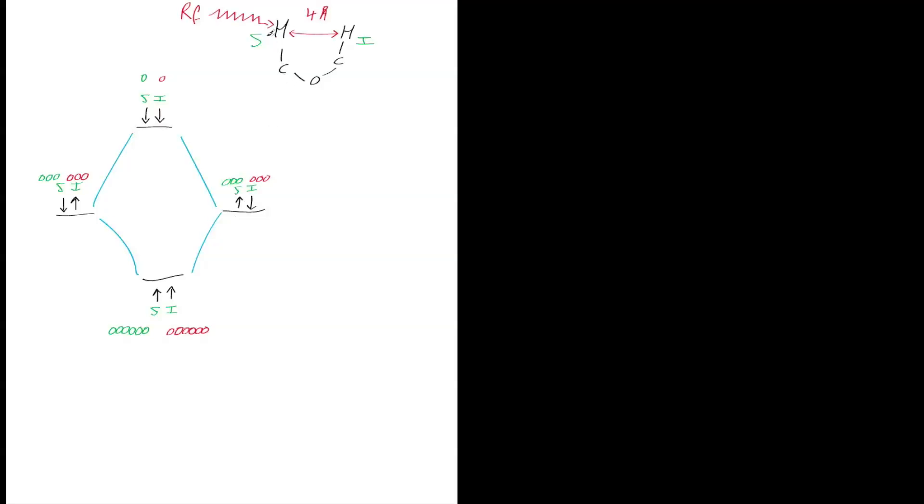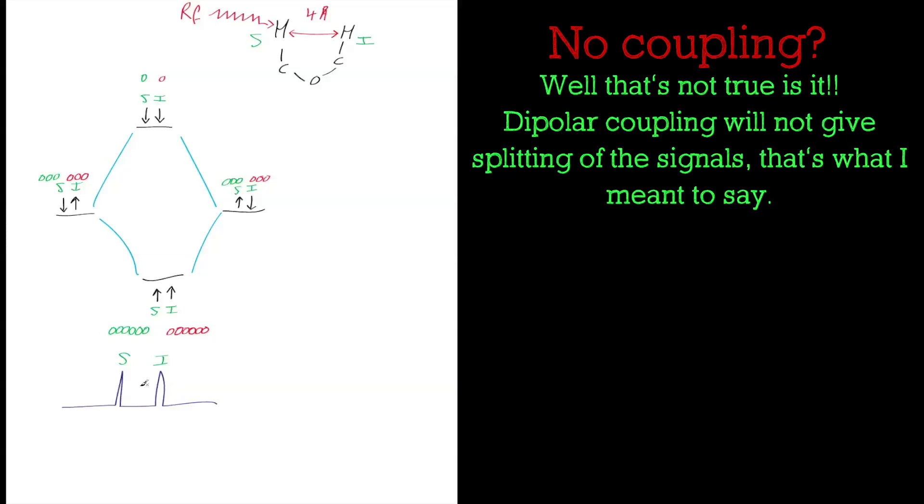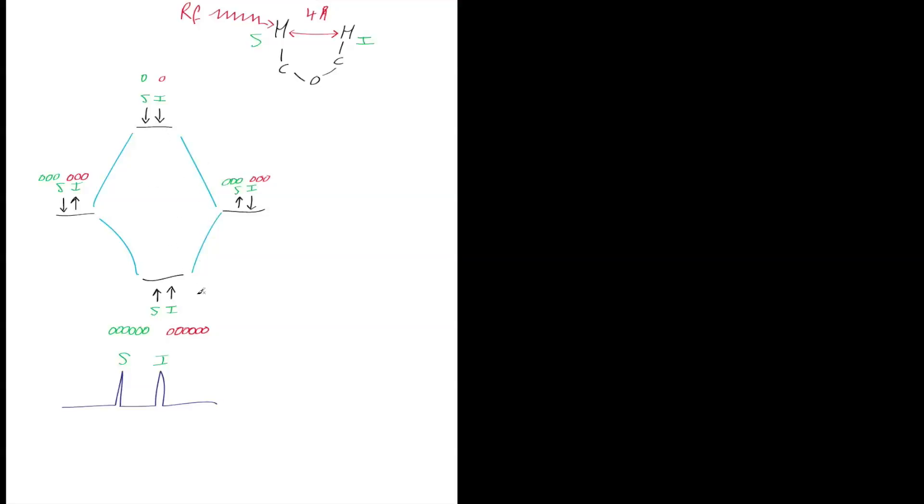We've got this distribution here with more in the ground state. That is for this two-spin system as it stands. If you run a proton NMR, you'd see one spin there, one spin there. This would be the source spin, this would be the interesting spin. There's no coupling between the two because this is dipolar coupling, so you don't get any splitting. There is dipolar coupling through space, but a normal proton NMR experiment won't show that up.